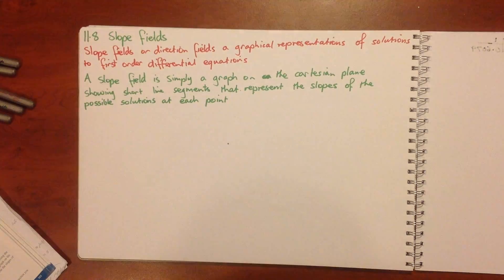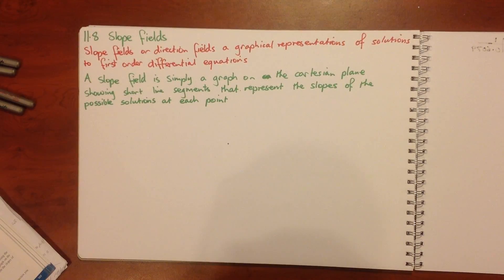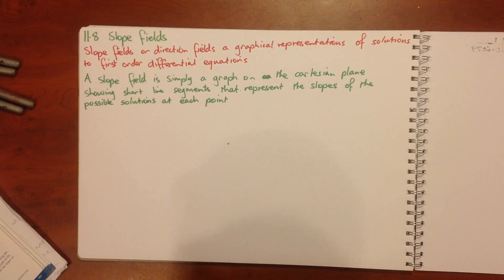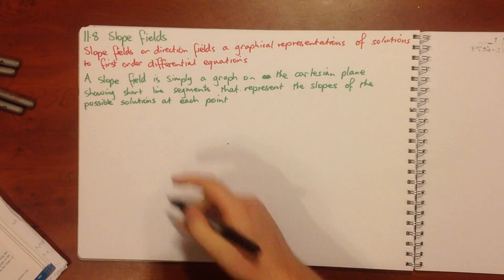In this tutorial we're looking at section 11.8 on slope fields. Slope fields, or direction fields, are graphical representations of solutions to first order differential equations. A slope field is simply a graph on the Cartesian plane showing short line segments that represent the slopes of the possible solutions.